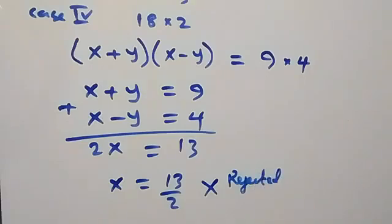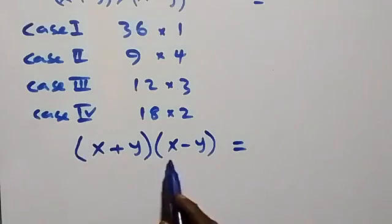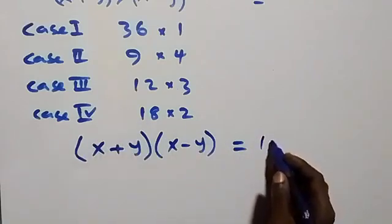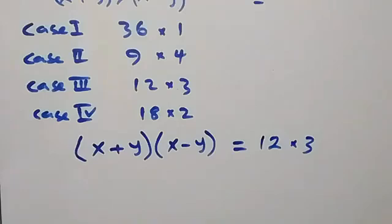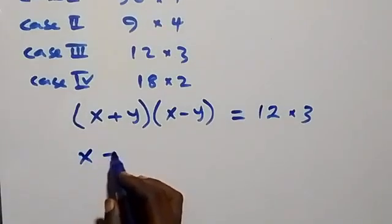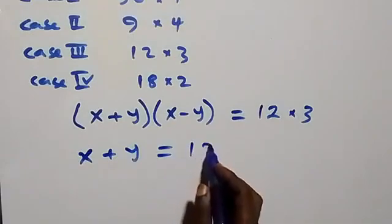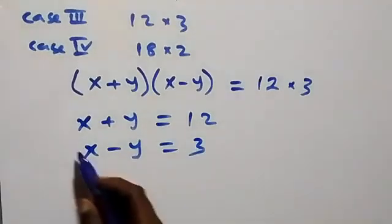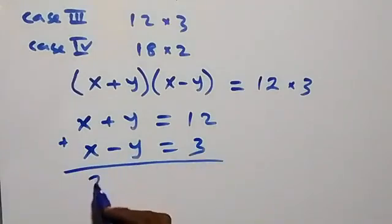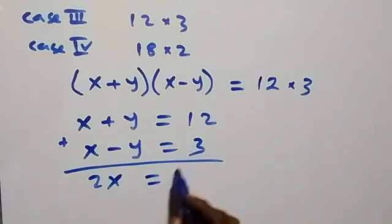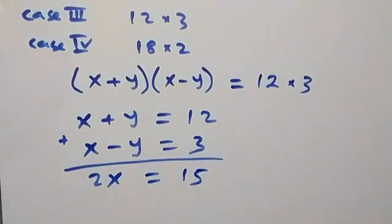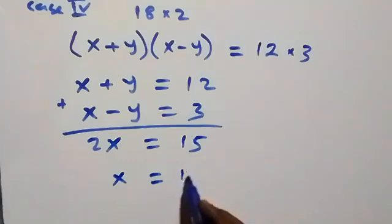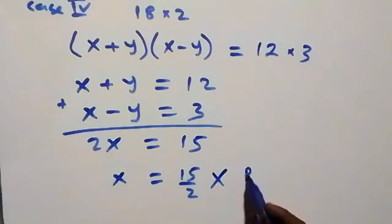For Case 3: (x plus y)(x minus y) = 12 times 3. This implies x plus y = 12 and x minus y = 3. Solving simultaneously by adding: 2x = 15, so x = 15 over 2. This is not a natural number, so it is rejected as well.